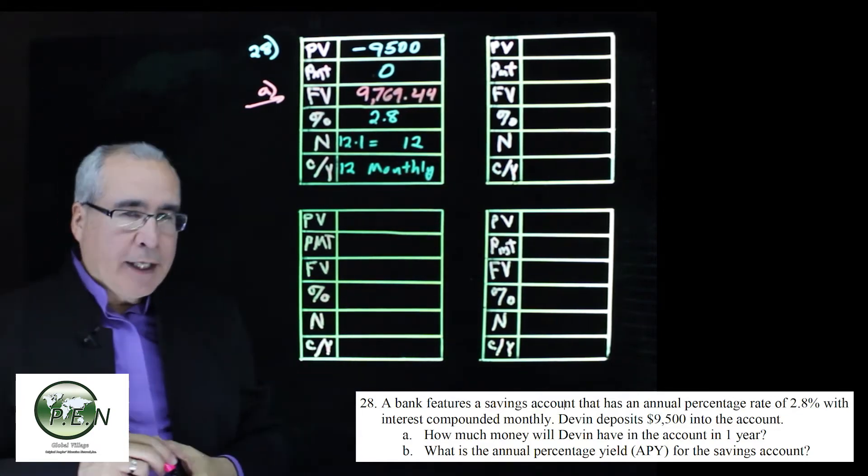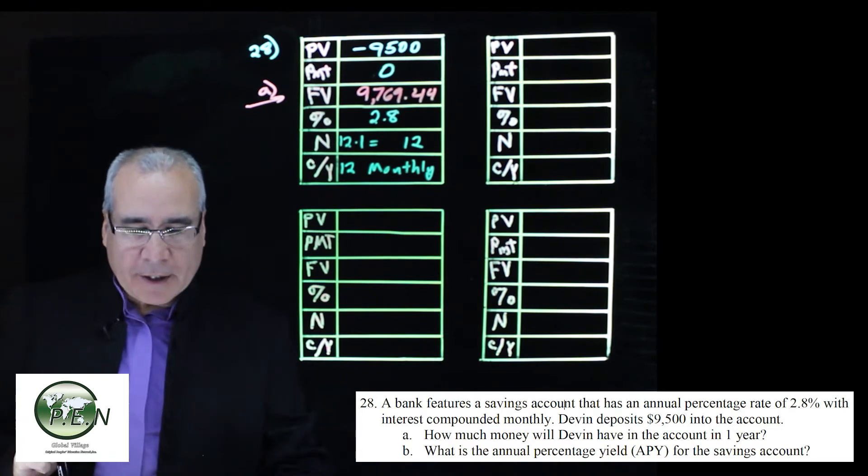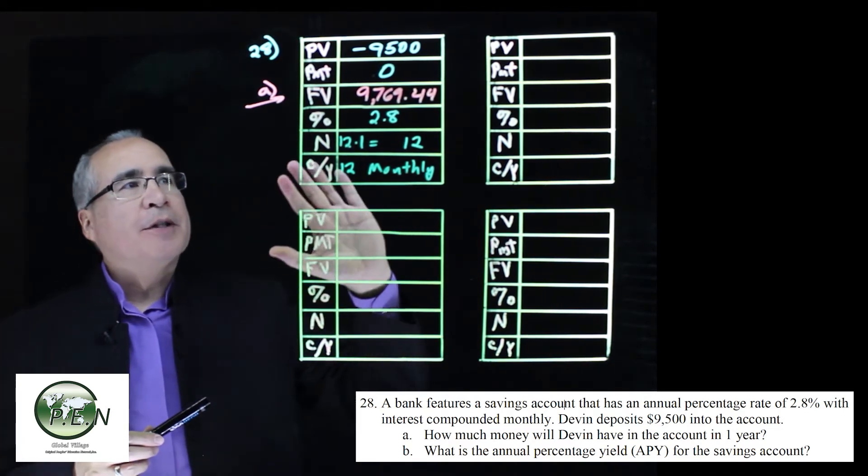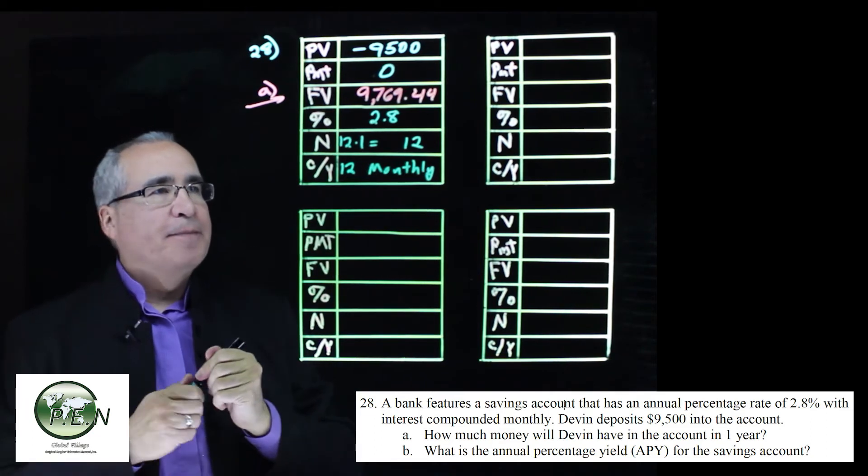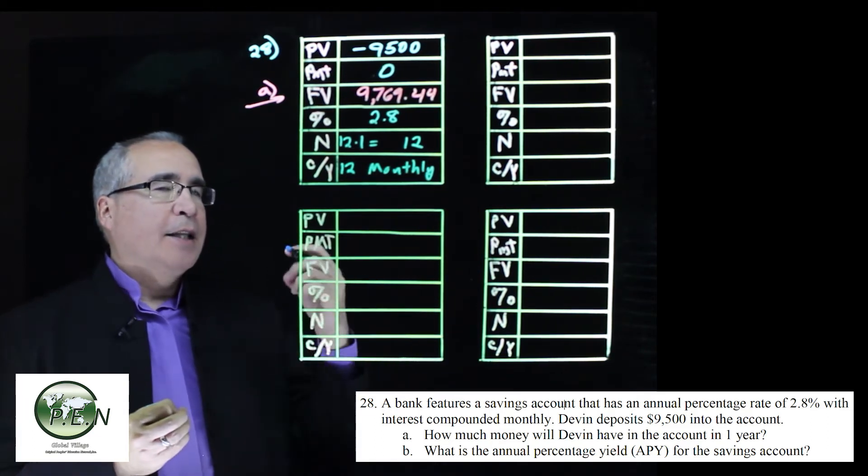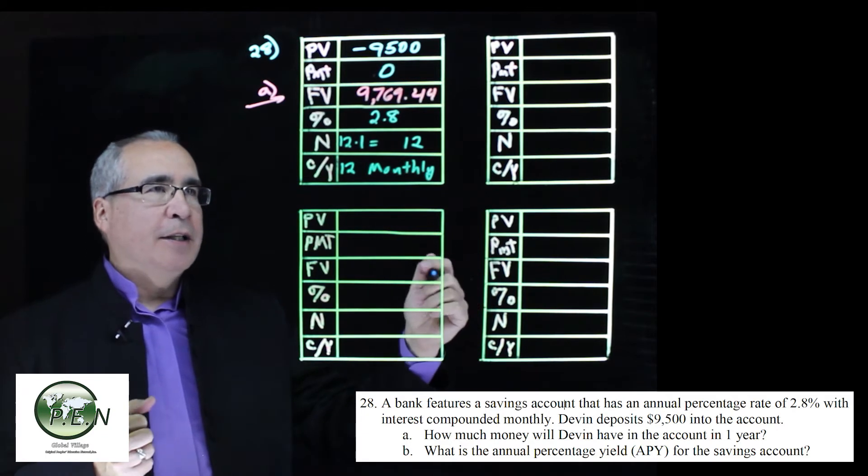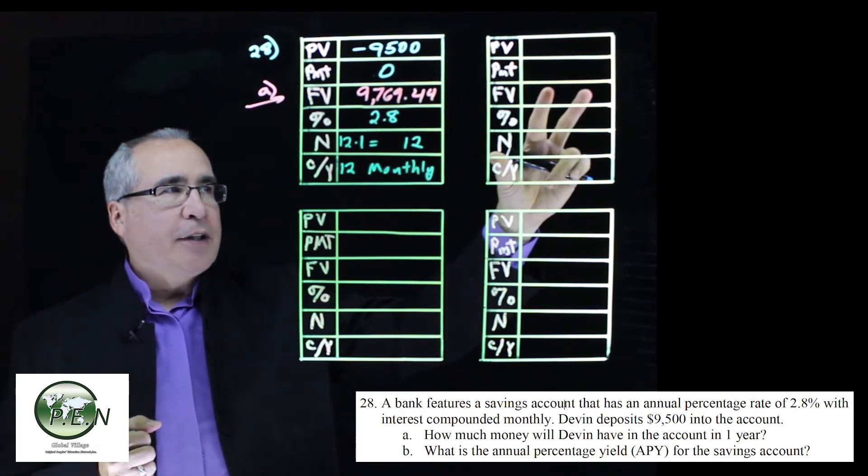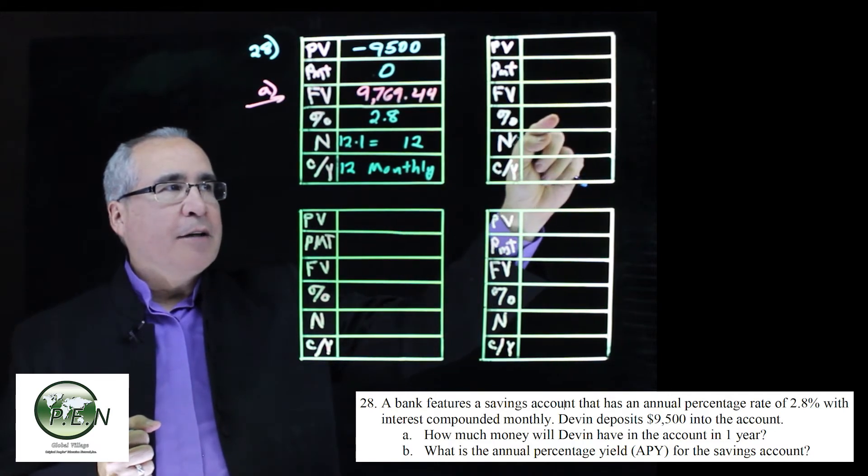Now the cool thing is that we have our calculator all set up. What we're going to do is we're just going to make a few changes. So the thing we're going to change to calculate the annual percentage yield, the interest rate, we're now going to be calculating. So I'll use the second one to kind of do it. We're going to calculate the interest rate.